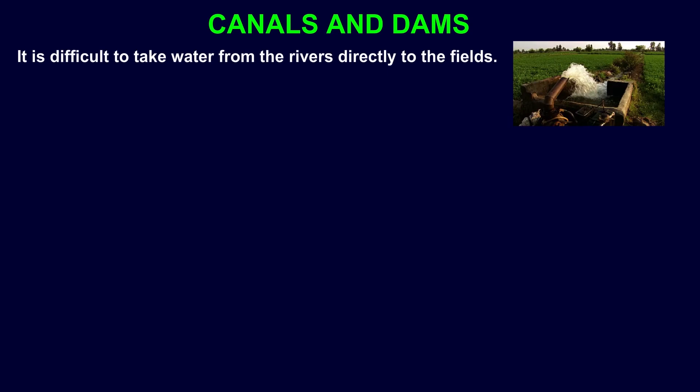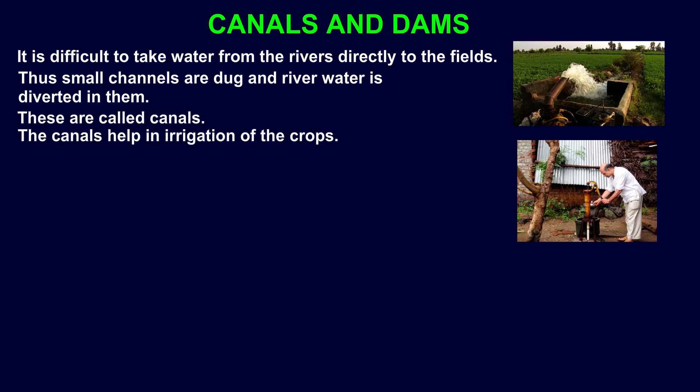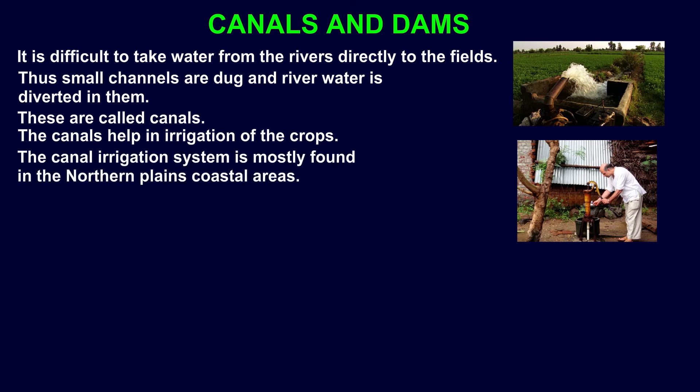Canals and Dams. It is difficult to take water from the rivers directly to the fields. Small channels are dug and river water is diverted into them. These are called canals. The canals help in irrigation of the crops. The canal irrigation system is mostly found in the northern plains and coastal areas.